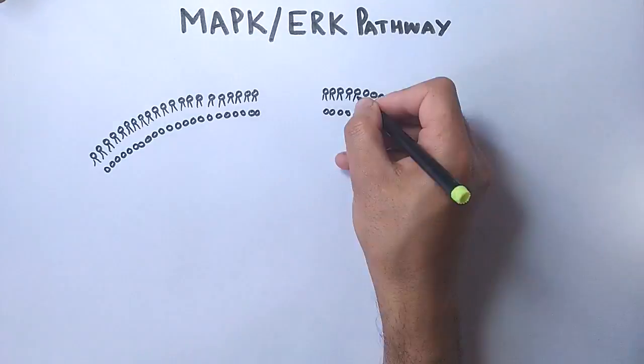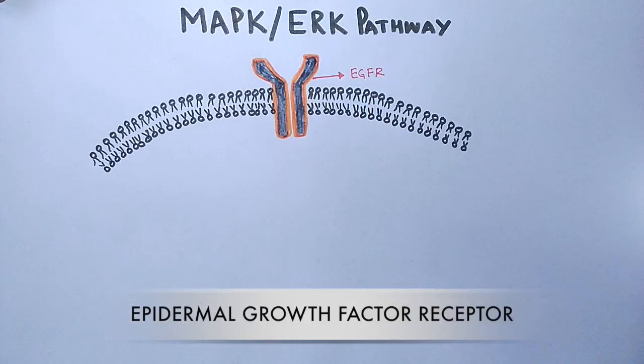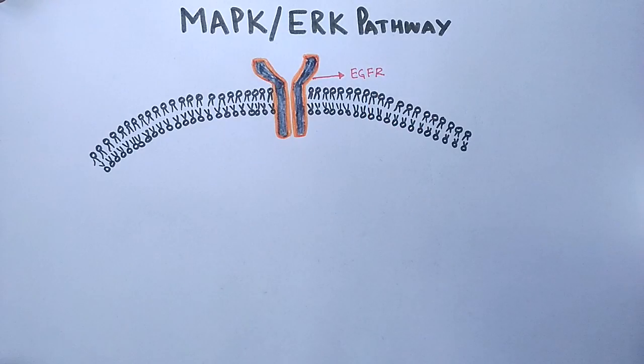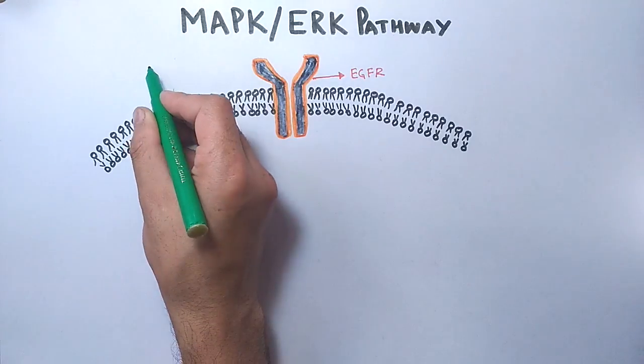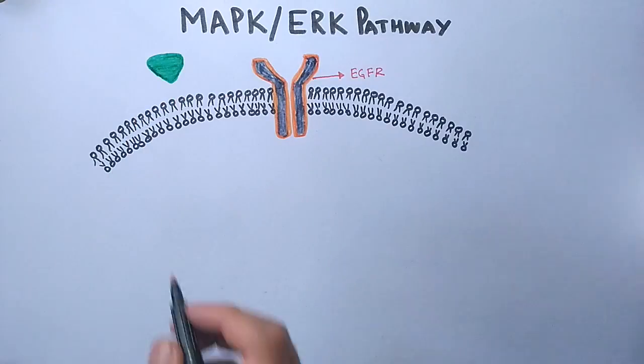Now let's see this pathway in detail. In the cell membrane, we have the EGFR protein, that's the epidermal growth factor receptor. It's just like an RTK receptor with two monomers as shown in the figure. On the outside of the cell, we have a signaling molecule in the form of EGF, that's epidermal growth factor.